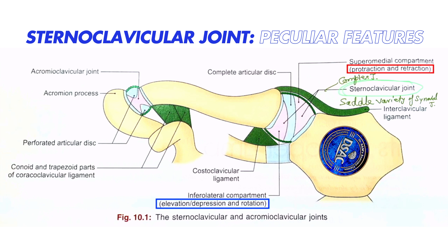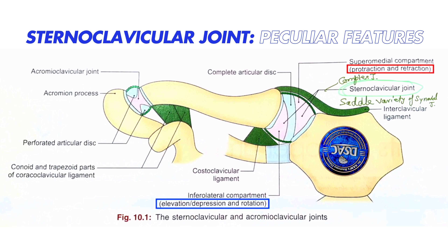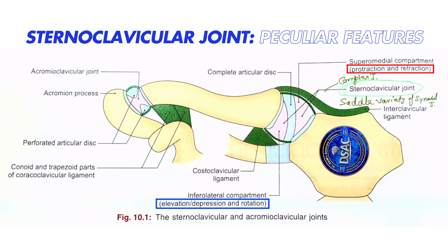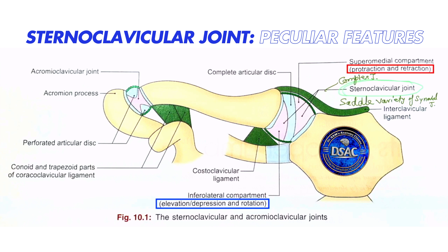Here you are seeing an image of both the joints and the two ends of the clavicle. Medially you have this joint called the sternoclavicular joint. The sternoclavicular joint is a saddle variety of synovial joint, as well as it's a complex joint. Because of the presence of this intra-articular disc, this joint space has been divided into two compartments.